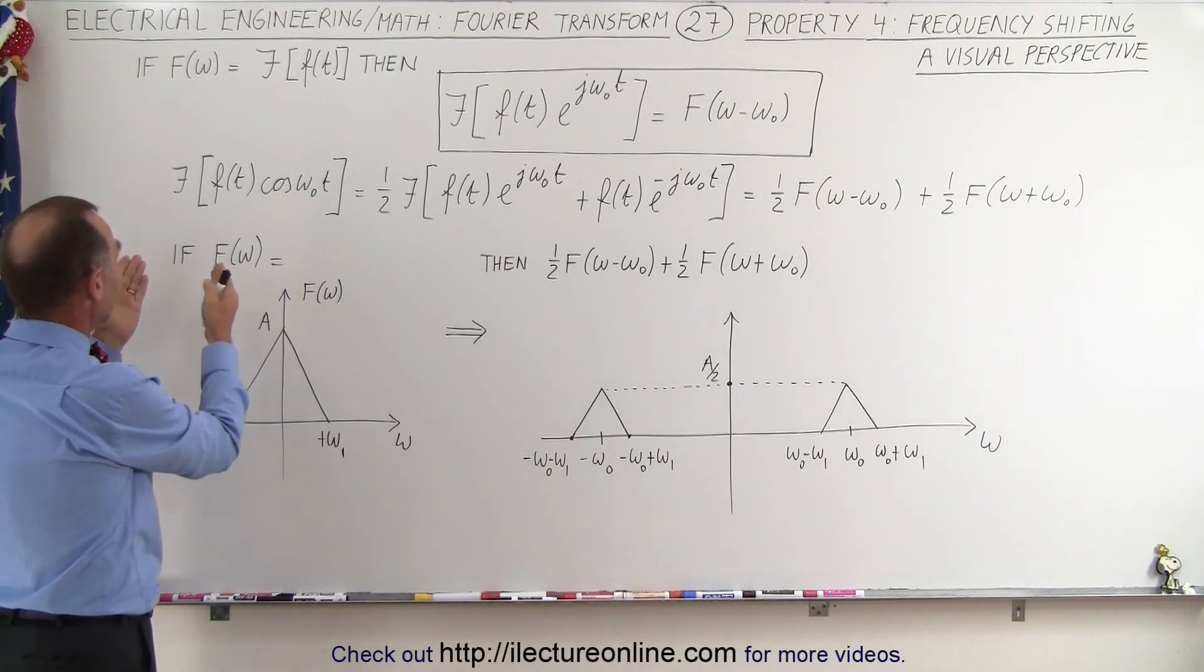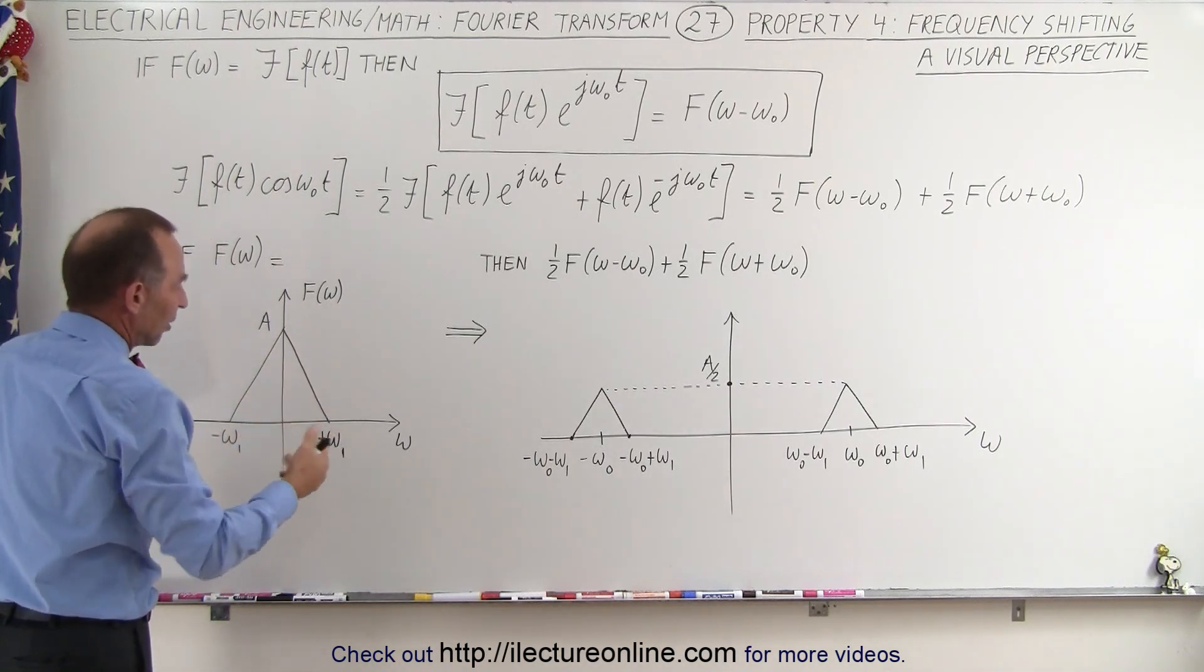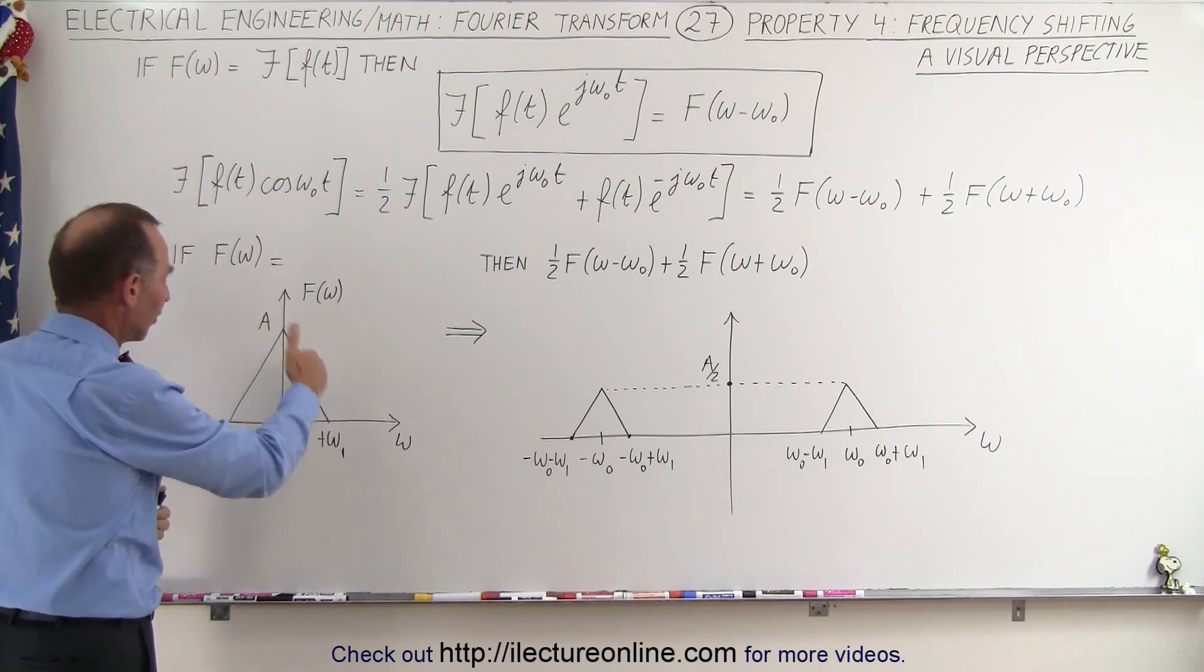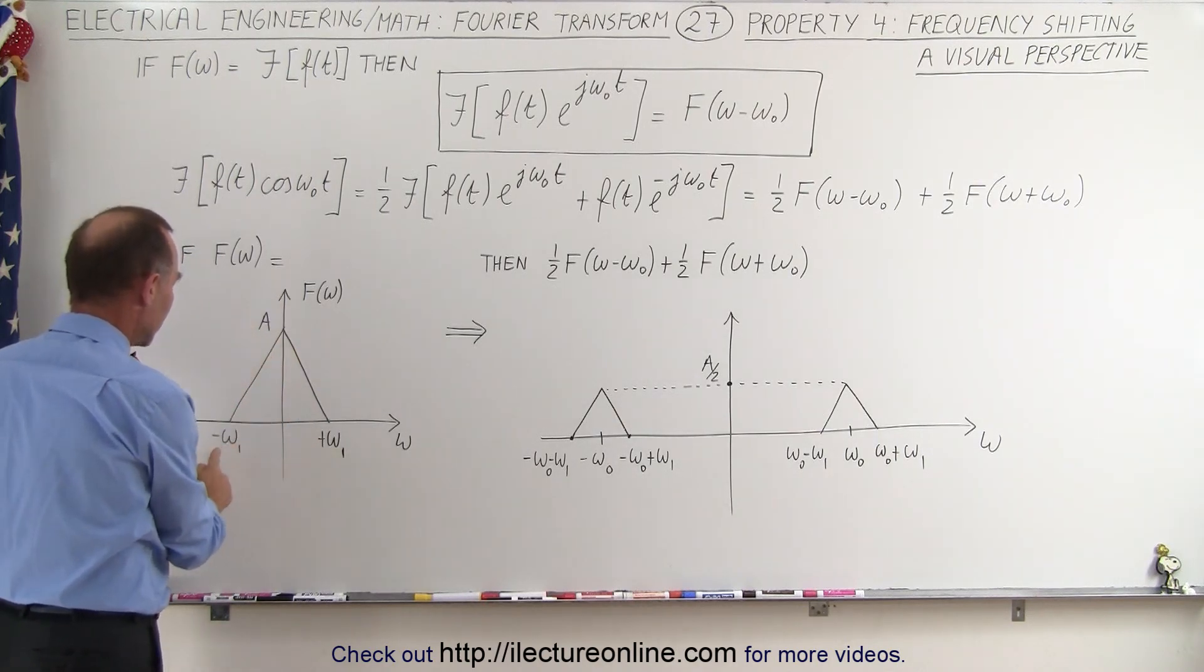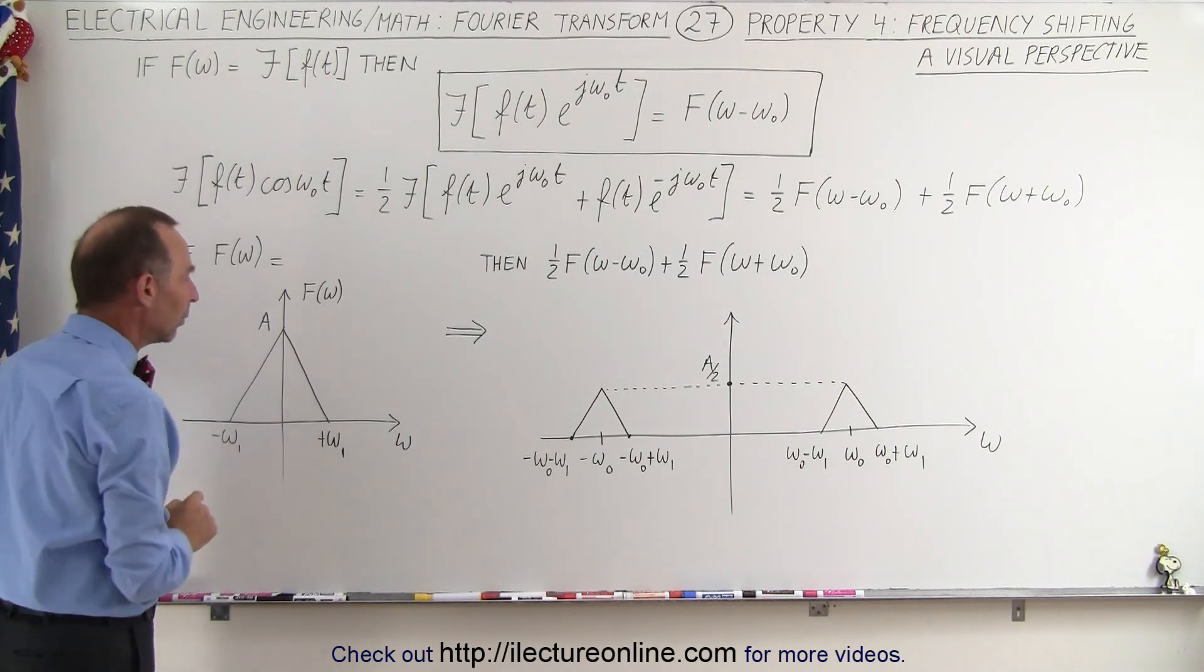Well, if we have f of omega represented by this function, let's say just any arbitrary function, in this case a triangular function with a certain amplitude a, you can see here that it ranges from minus omega one to plus omega one.